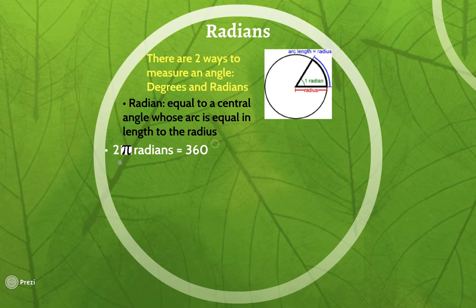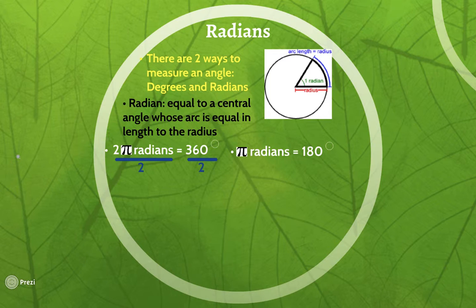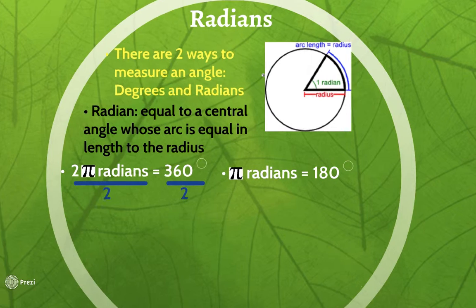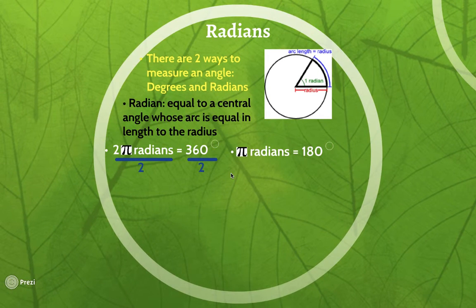In math, we like things in their simplest form, so we can divide both sides by two. Two pi divided by two gives us pi, and 360 divided by two gives us 180. So an easier way to look at this is: in 180 degrees, which is half a circle, there are pi radians. We're going to use this conversion because the smaller the numbers we're dealing with, the easier the math will be. So in half a rotation, pi radians equals 180 degrees, and this is what we'll use to convert between degrees and radians.